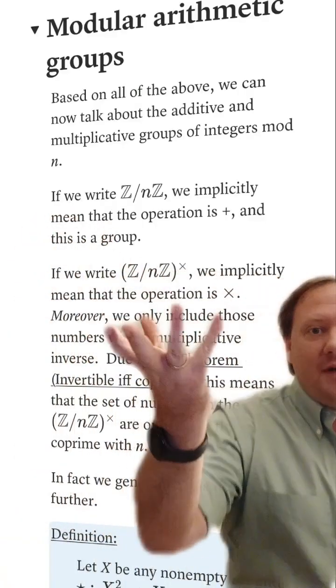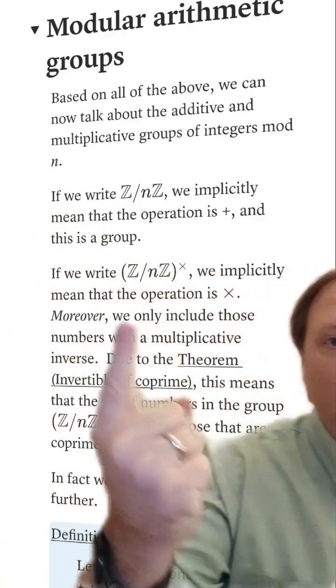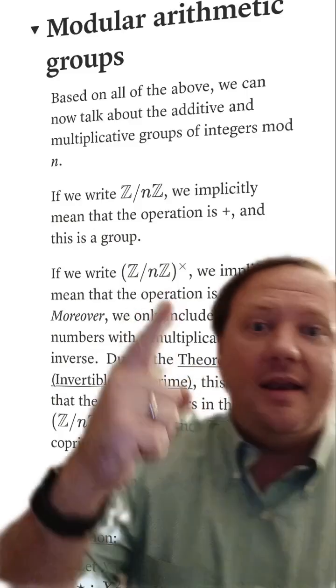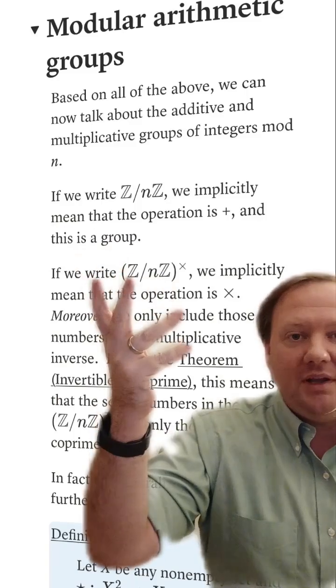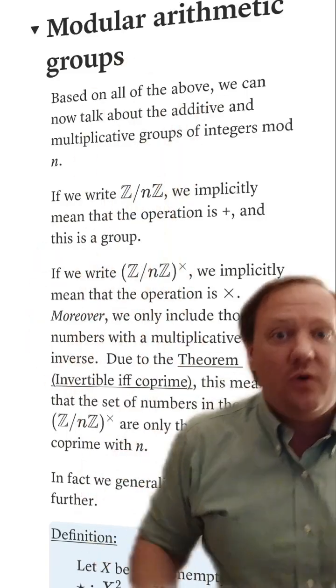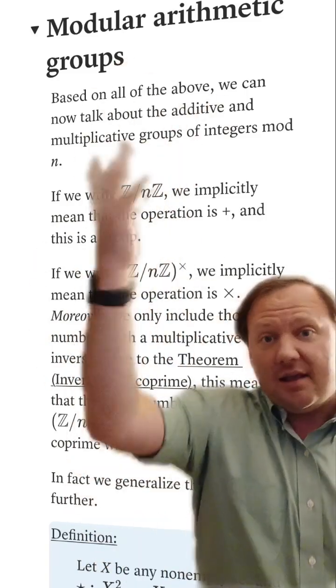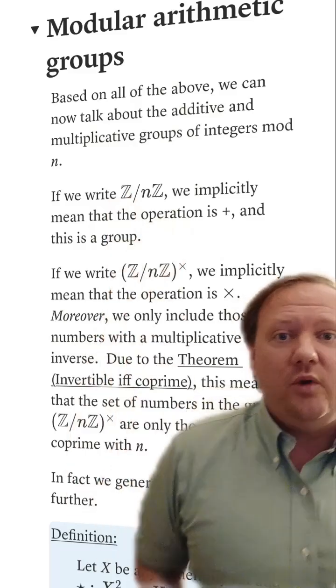Based on all of this, we can define the notion of the group of units of the integers mod n. That is, the set of all the numbers that have a multiplicative inverse. And by what we just showed, that's actually just the same thing as all the numbers which are coprime with n.